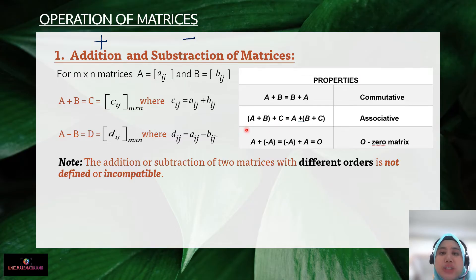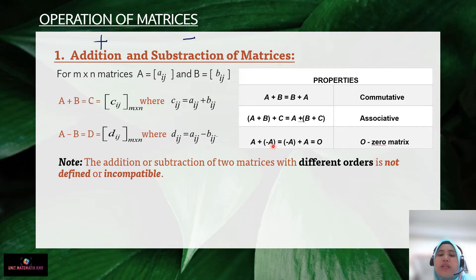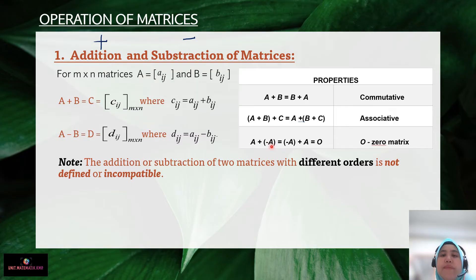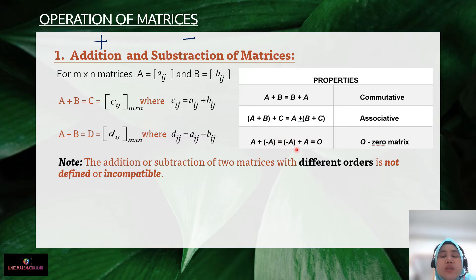Next, A plus negative A gives the zero matrix. Whether you put negative A at the back or in front and add matrix A, you change the position but the result is zero. That zero result is called the zero matrix.